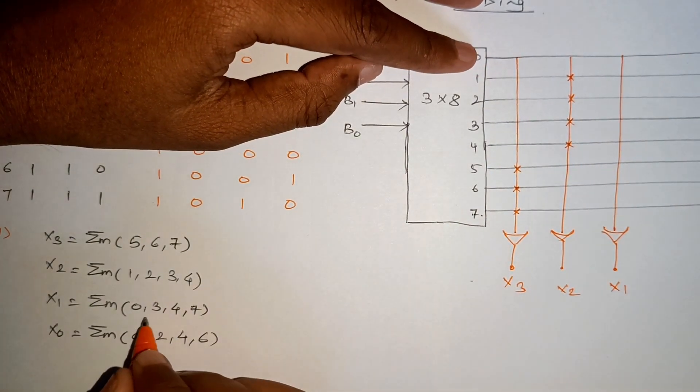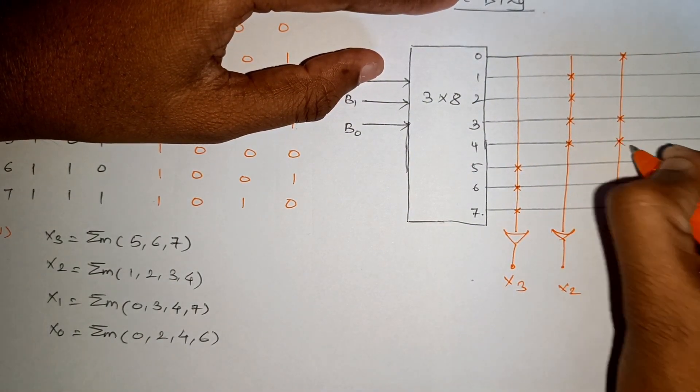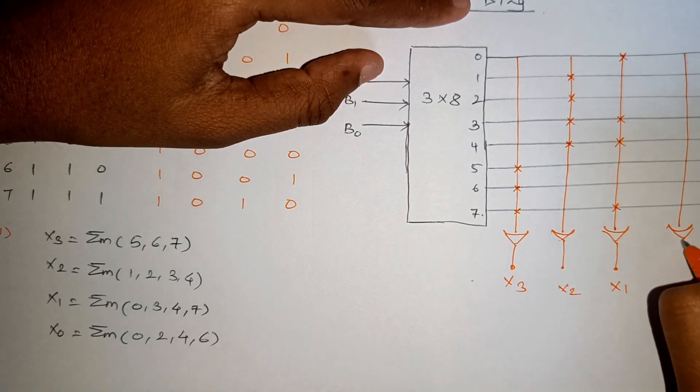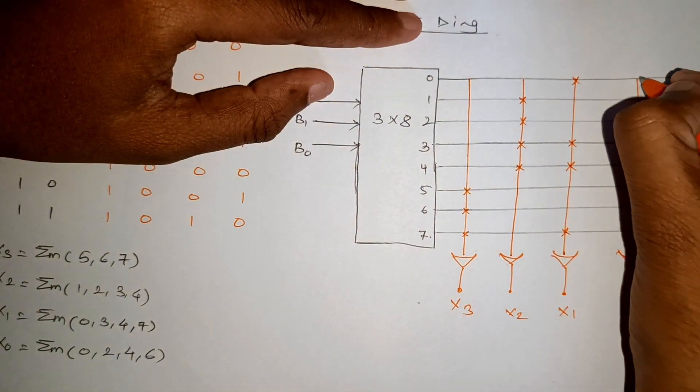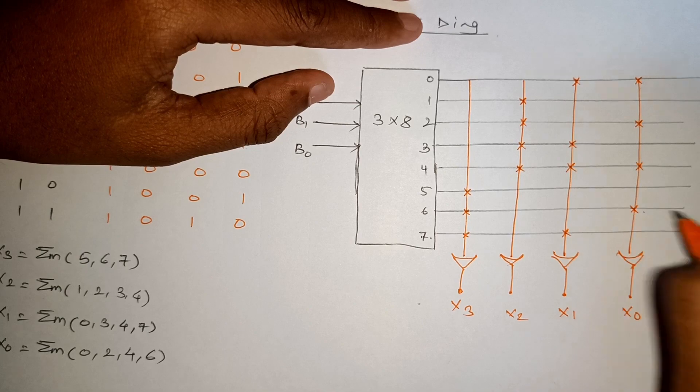This is X1, which is 0, 3, 4, 7. So we connect 0, 3, 4, 7. And this one is X0, which is 0, 2, 4, 6. So we will mark 0, 2, 4, and 6.